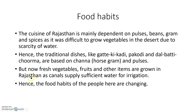But now, fresh vegetables, fruits and other items are grown in Rajasthan as canals supply sufficient water for irrigation. Irrigation means water supply to agricultural fields. Through canals, water is sent to these places, so nowadays people can also grow vegetables there. Hence, the food habits of the people are changing. Before, traditional food items were all made with pulses and grams, but nowadays food habits are changing because of the canals.